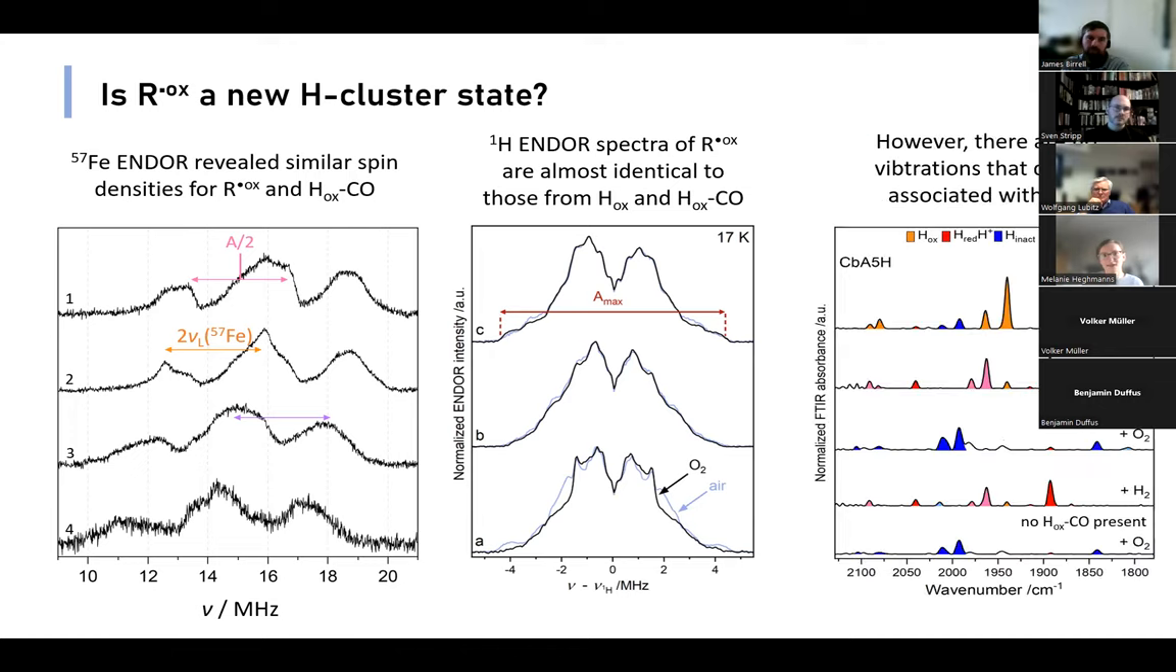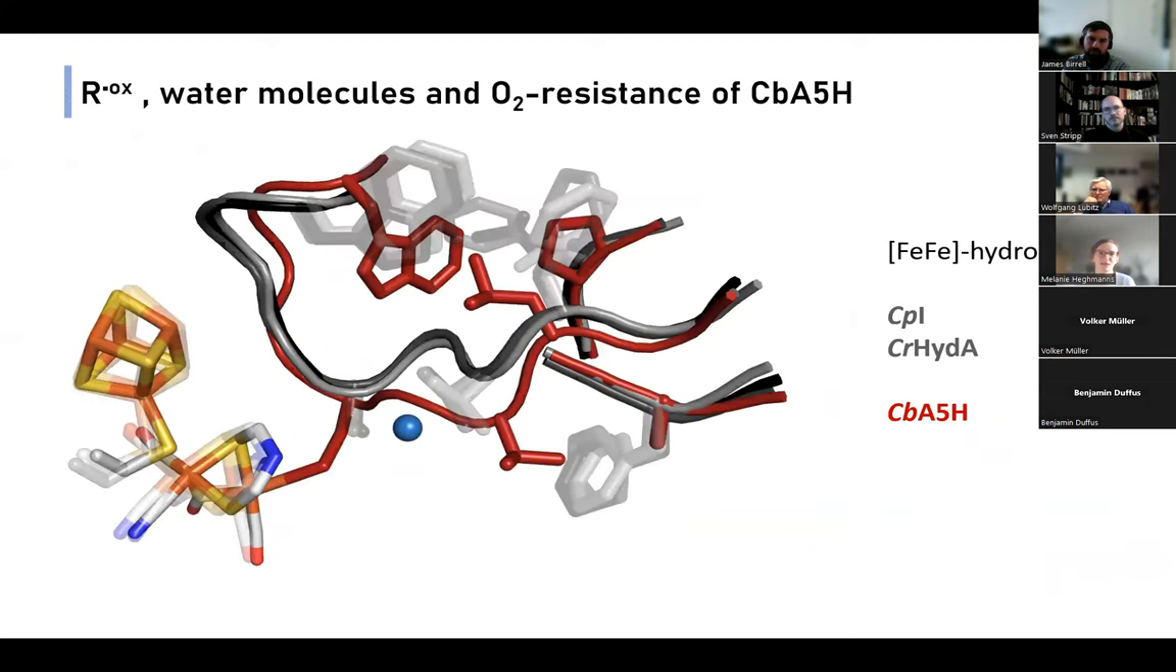However, our proton ENDOR shows that R^ox is almost identical to those from H-ox and H-ox-CO. But what holds us back to assign R^ox to a new H-cluster state is that we cannot observe any FTIR vibrations that we can associate with R^ox. When you look at the oxygen-treated samples, it only shows the H-inact state, but also no H-ox-CO or other vibrations.